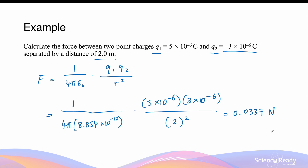Force is always a vector quantity, so we also need to describe its direction. For electrostatic forces, the direction simply depends on whether the charges are opposite or alike. In this example, q1 is positive and q2 is negative, so the force is attractive — directed towards each other, towards the other charge.